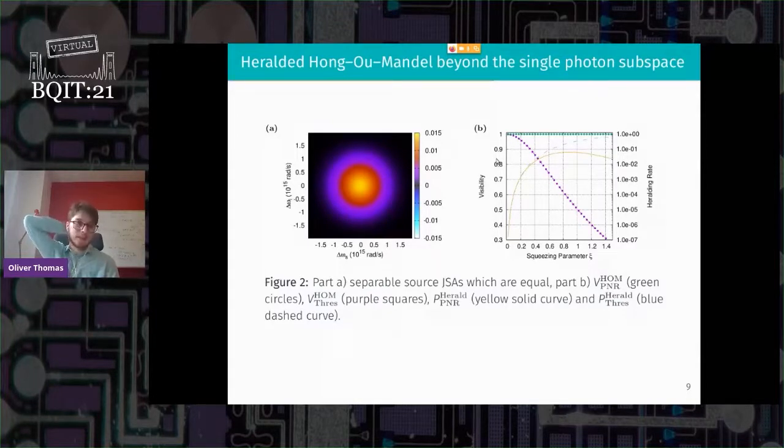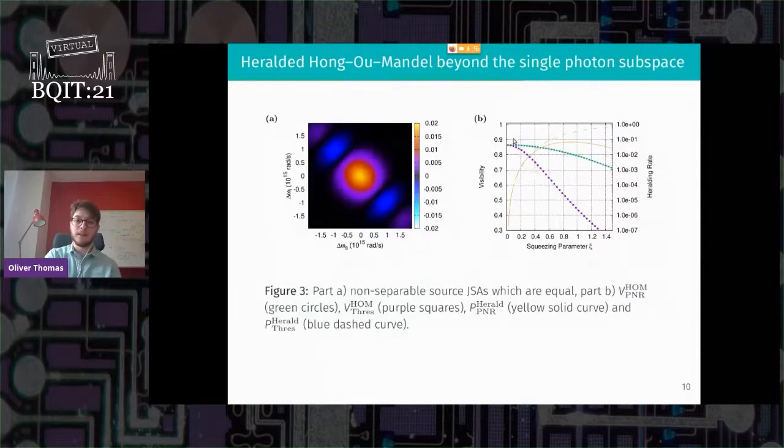And then this right hand side corresponds to this yellow line and this blue line. The yellow line, or orange I guess, is our number resolving heralded rate. So this is the one photon subspace. So it's maximized around 0.9. And then higher order photon terms take over as the most frequent. And then this dashed blue line is for threshold detectors. And you see it tends to one because we're not discriminating photon numbers. So for the number resolving, it's very clear you should just squeeze at the highest rates you can because the visibility is always one. For the threshold detectors, you kind of have to be in this lower regime.